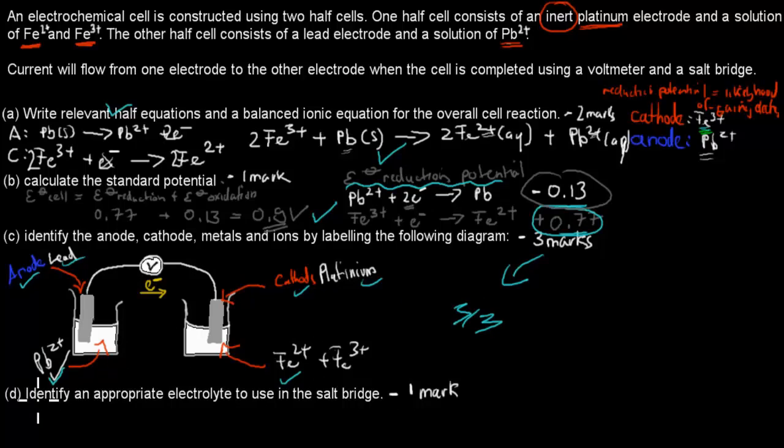And then it says, identify an appropriate electrolyte to use in a salt bridge. So for a salt bridge, which I didn't include here, what would be the appropriate solution? So in this case, I just wrote potassium nitrate. But there are quite a few different ones you could have written, but it says identify, so all you need to do is name it. In this case, I wrote potassium nitrate. And that's a simple mark as well. So that would have been in total of six out of six if you've done that kind of setup.